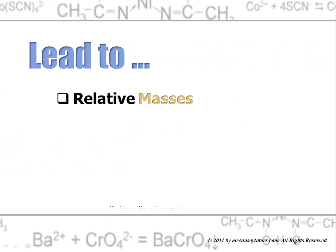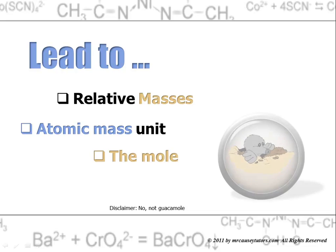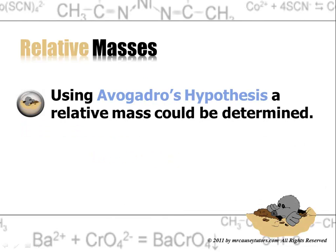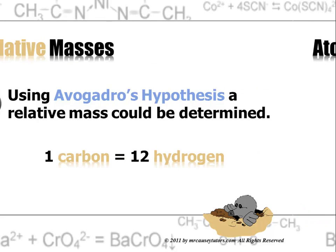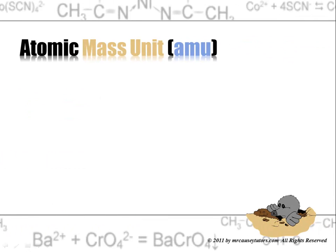And this led to relative masses, atomic mass unit, and the mole. Using Avogadro's hypothesis a relative mass could be determined. And they decided or determined that one carbon could equal 12 hydrogen. So there's a 1 to 12 ratio there and they used that to develop the atomic mass unit.